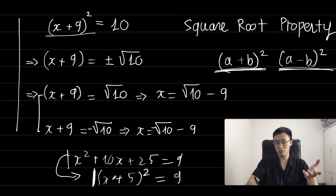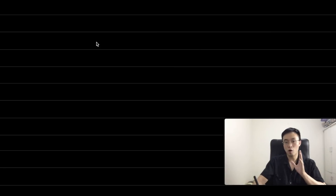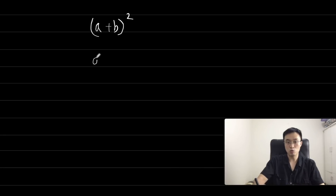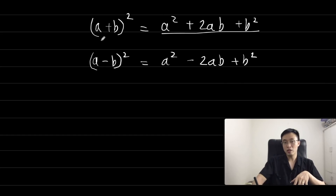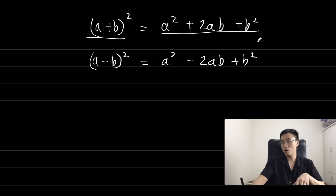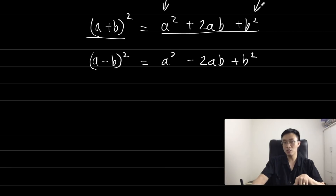The process of changing a trinomial into a perfect square is called completing the square. The fundamental theorem of completing the square uses two identities: (a+b)² and (a-b)². We have (a+b)² = a² + 2ab + b², and (a-b)² = a² - 2ab + b². In the right-hand side you get a trinomial — an expression with three terms: the first term is a², the last term is b², and the middle term is 2ab.